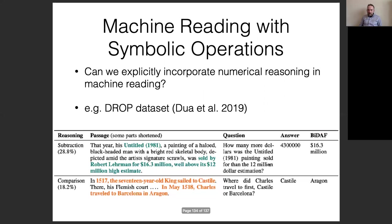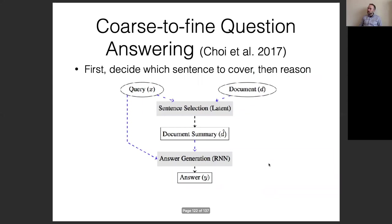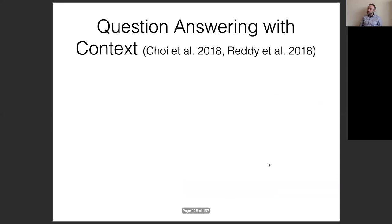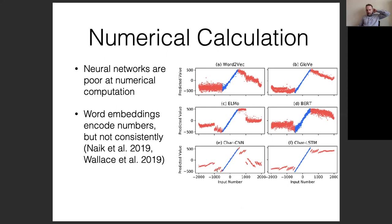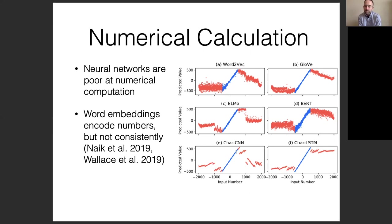Regarding whether character CNNs can do translation from words to values: yes, character CNNs and character LSTMs can do this to some extent. But the bigger problem is generalization beyond the values seen at training time. Any calculator can generalize — you don't train a calculator only on values from -500 to 500 and expect it to only work in that range. Symbolic math is something we should be able to do well, but neural networks cannot, because they can't generalize beyond their training distribution.